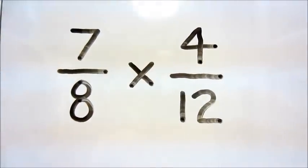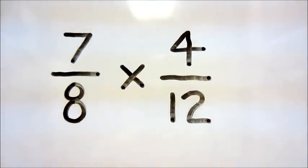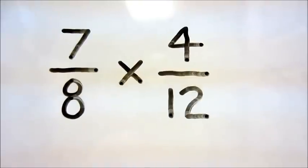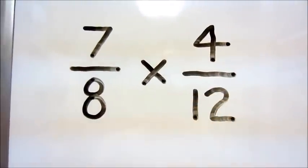What we need to do is look for common factors between one of the numerators and one of the denominators. This may not always be possible, but sometimes it is. In this case, 4 goes into 8 two times.